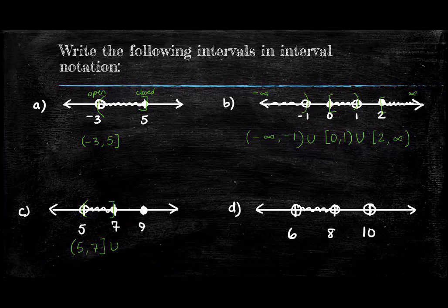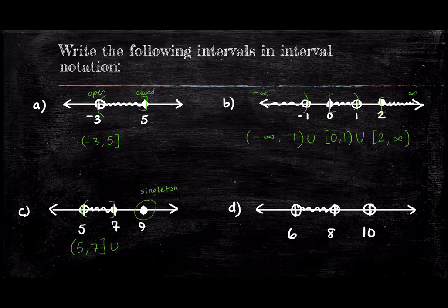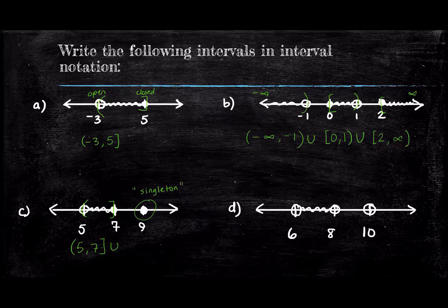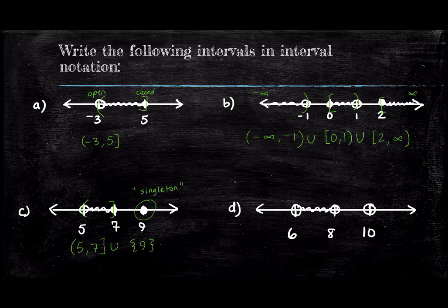We add in the union symbol because there's one more interval. But wait, this nine that is chilling like a villain, if you will, is not an interval at all. It's a single number, which we in the math world call a singleton. For singletons like nine, we use set braces on both sides of the number. And that finishes off our description of this set.